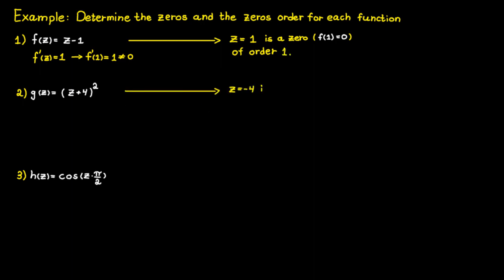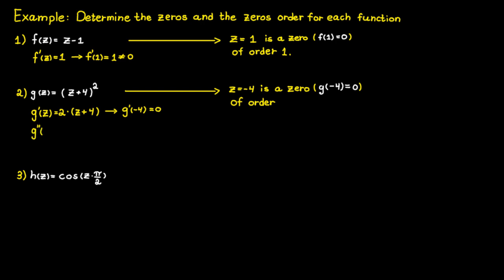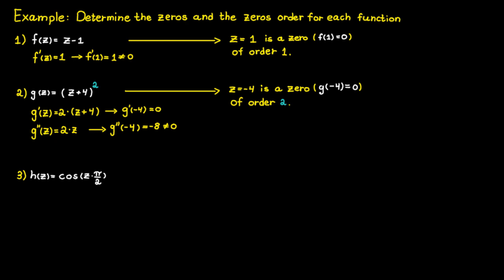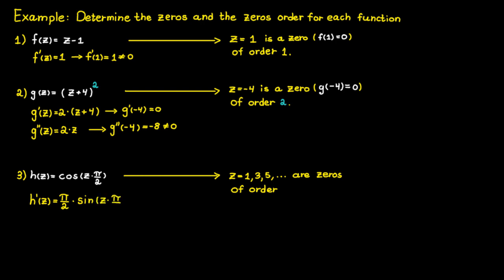For the next function, we can see that C equals minus 4 is a zero. The order is not 1 this time, since the first order derivative evaluated at minus 4 is zero. But if we derive it once more, the second order derivative evaluated at minus 4 is not equal to zero, and therefore the order of the zero is 2. We can observe that the order of a zero equals the power the parenthesis is raised to — a neat trick that will save time. In the third example, the function equals zero whenever C equals odd numbers, so those odd numbers are zeros, each of order 1.